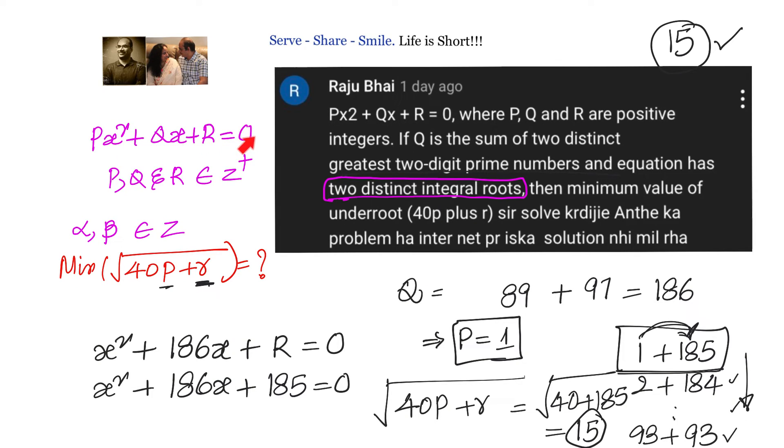Let's have a recap of this. We have been given that px² + qx + r = 0 is an equation in which p, q, r are positive integers. If alpha, beta are zeros, then they are two distinct integral roots and the value of q is sum of two distinct greatest two-digit prime numbers. Now greatest two-digit prime numbers are 97 and 89, that means q value equals to 186. We want to have two distinct integral roots, that means p should be equal to 1. Now I have x² + 186x + r = 0. The value of r should be minimum maintaining that sum equals to 186. That happens only when I take 1 and 185 because if I take other options, r value will become more. So p is 1 and r is 185. Substituting, we get minimum value equals to 15.